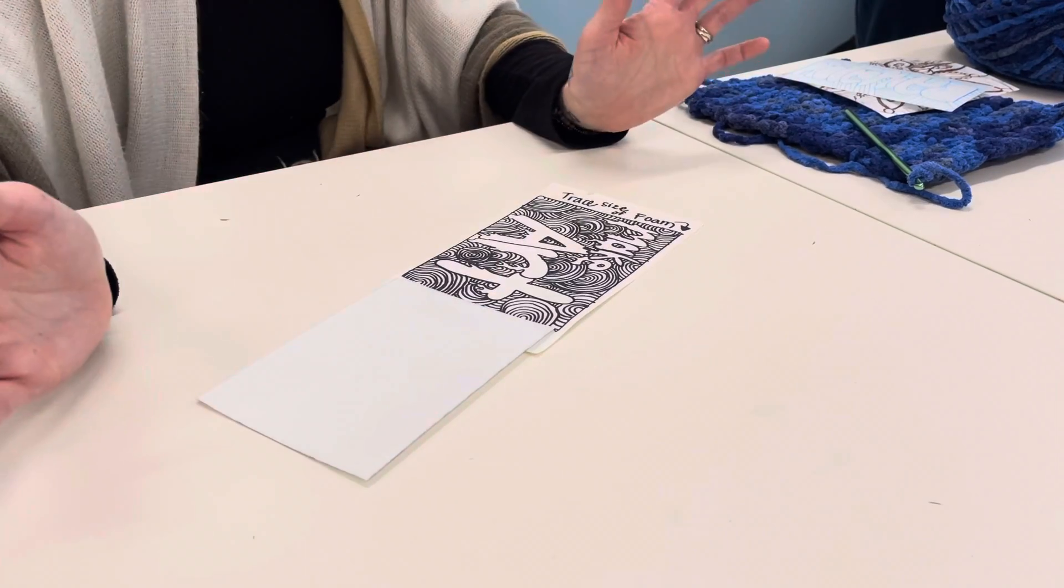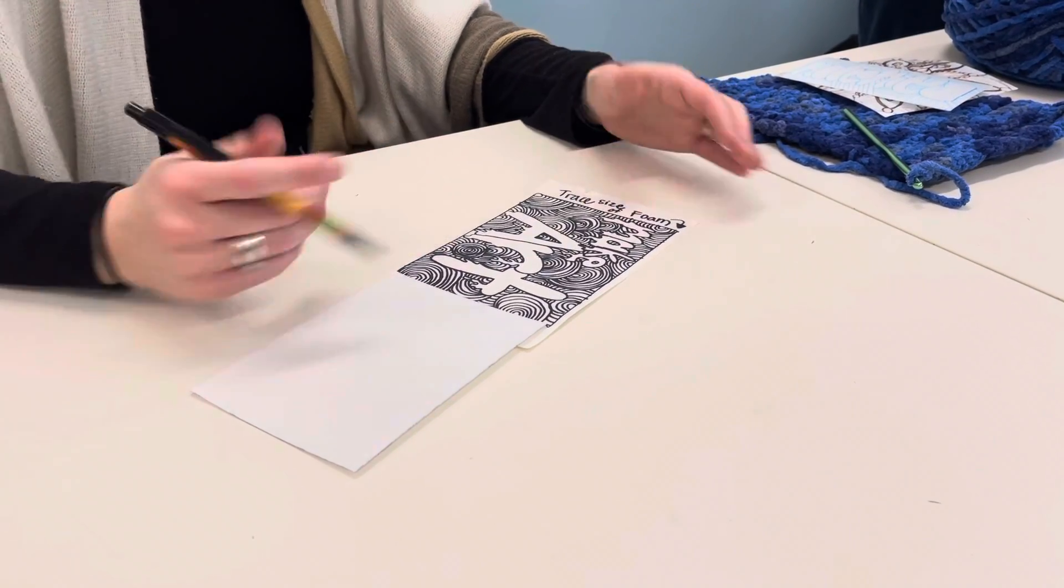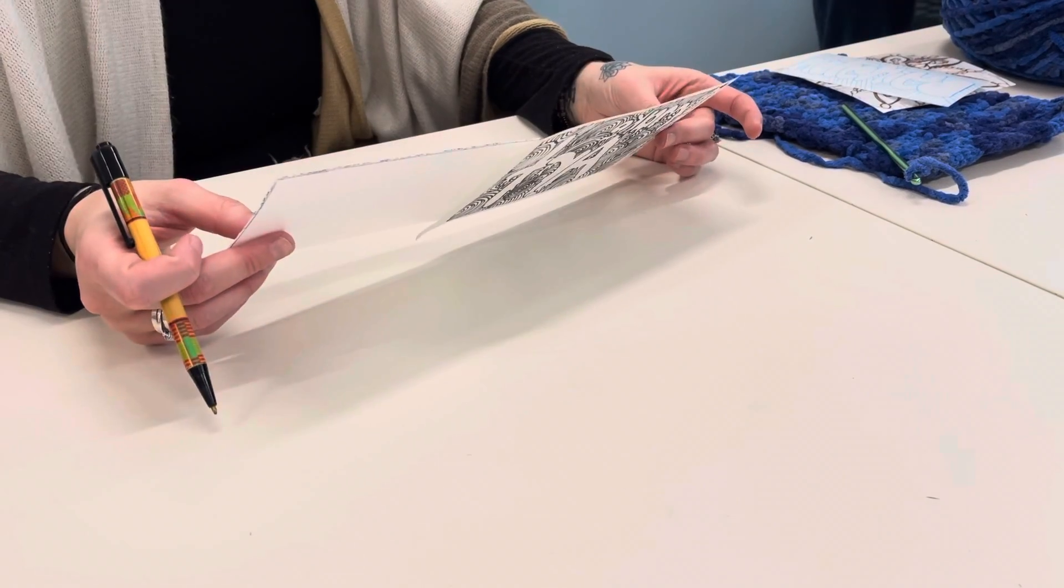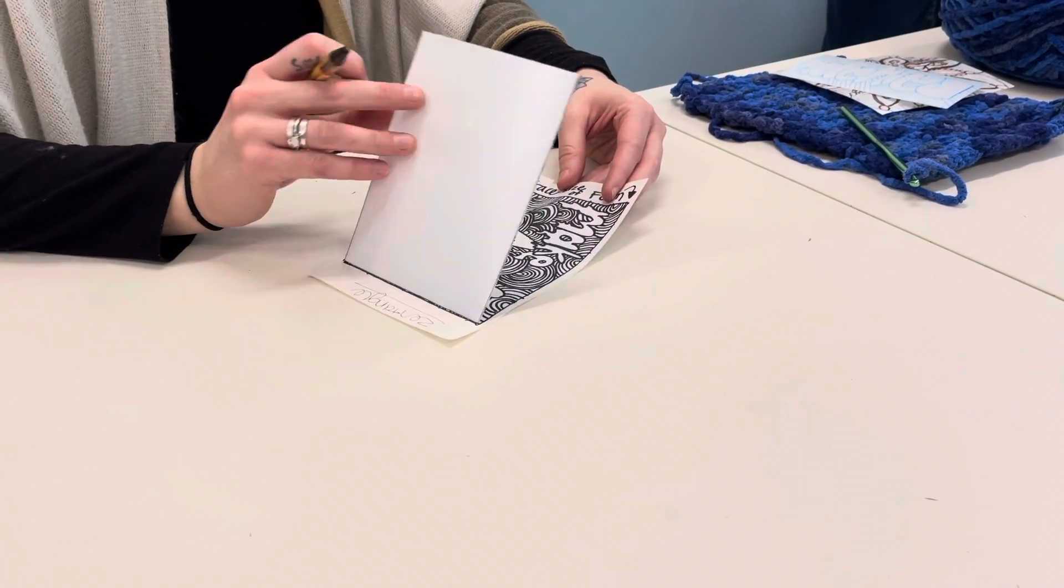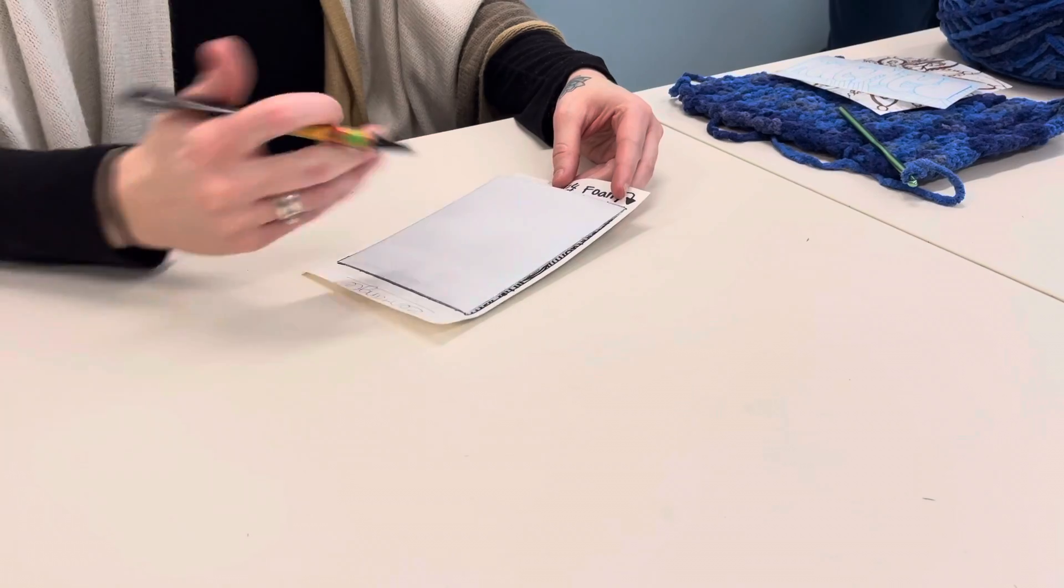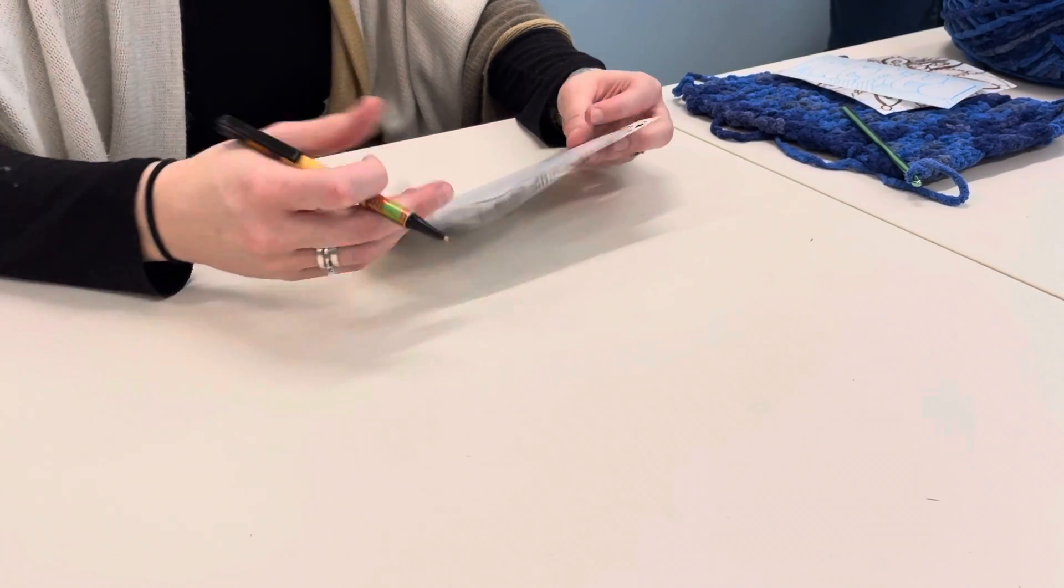So anyway, so I got my thing drawn. I got it in Sharpie because I have words. If you do the words, you're going to tape your foam down on top of that image. If you don't do words, you can put it on the backside.